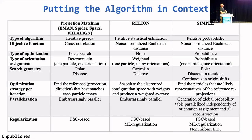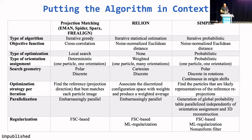The regularization approach in projection matching is typically FSC-based. RELION now has FSC-based regularization, elegant ML regularization, and neural network-based priors that we will also be excited to test. In SIMPLE, we have both FSC, ML regularization, and we have implemented CryoSPARC's non-uniform filter. Generalization of this method is pretty straightforward for heterogeneous data.